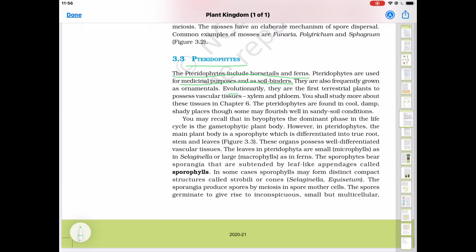Evolutionarily, they are the first terrestrial plant to possess vascular tissues xylem and phloem. So pteridophytes are the first land plants which have xylem and phloem.